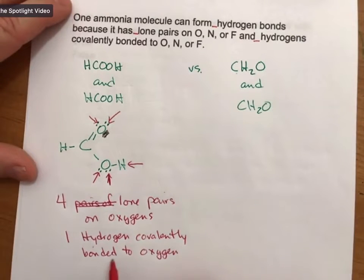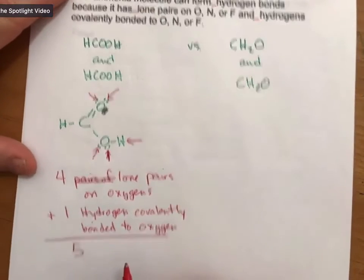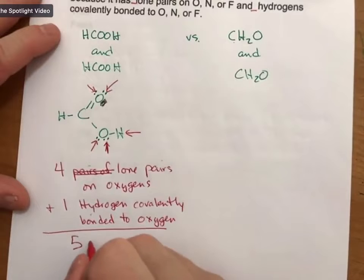Which means that it can form, you add these up, and it can form possibly five hydrogen bonds.